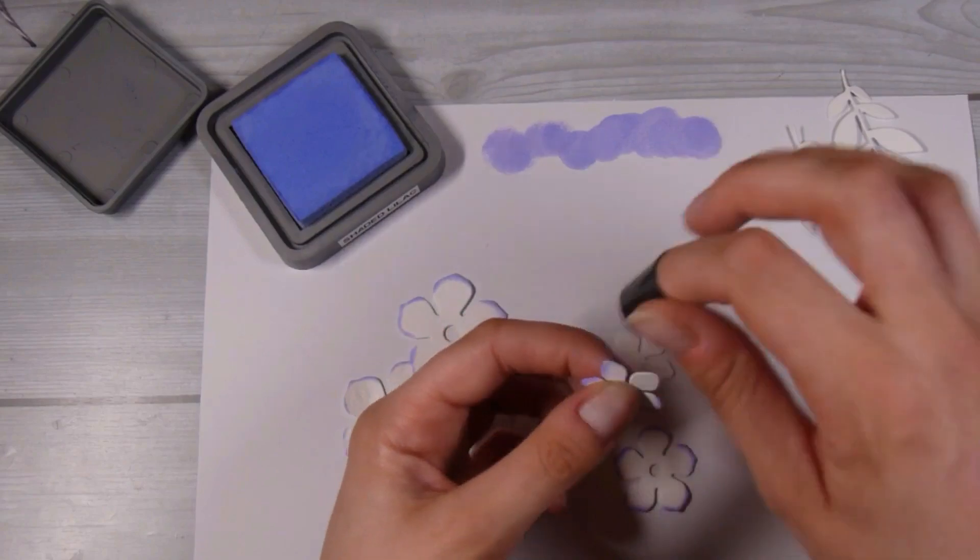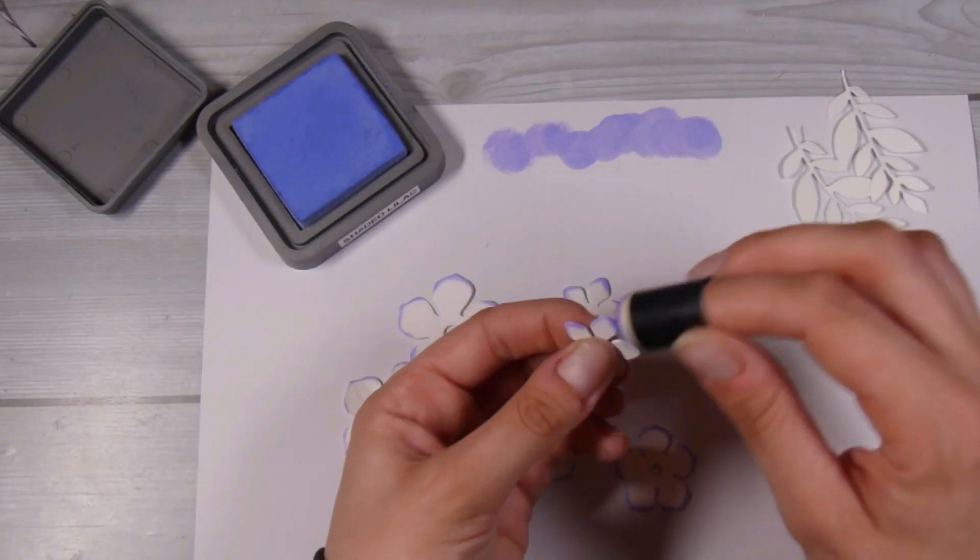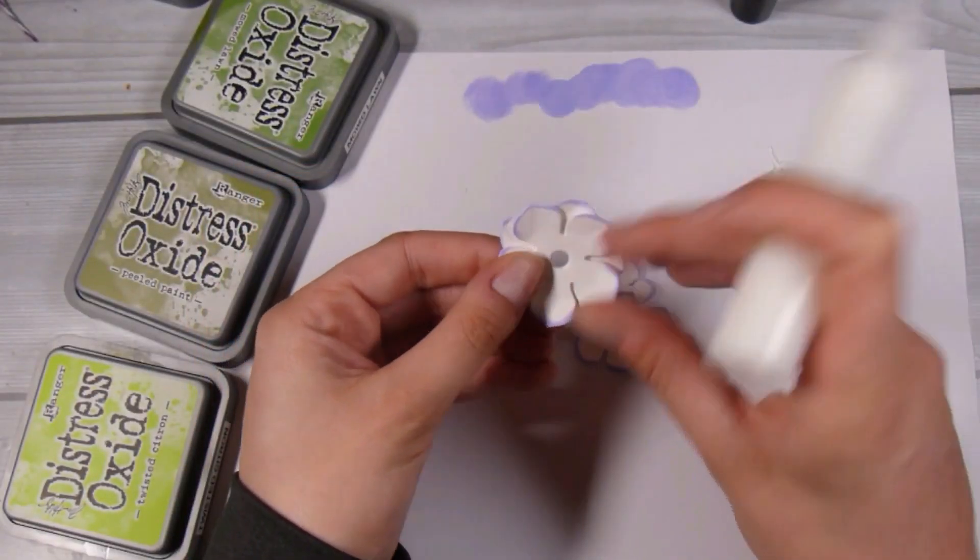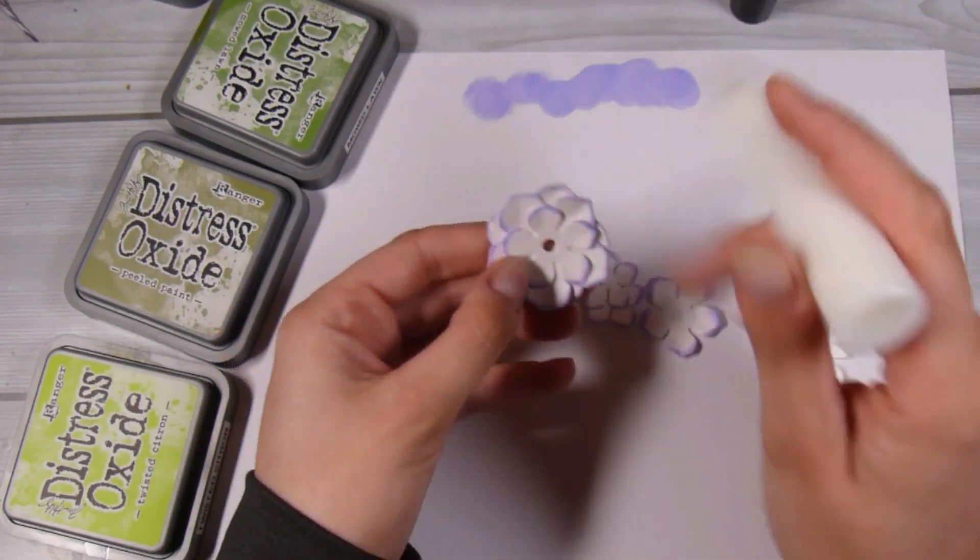I'm doing it to all of the sizes and I roughly have two of the large one, two of the medium, and then two of the smaller flower. Then I was going to start on my leaves but before I do that I'm going to let this all dry.